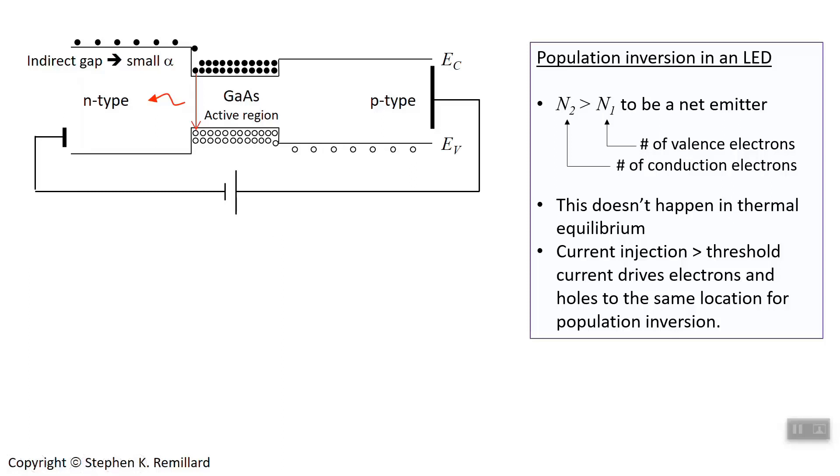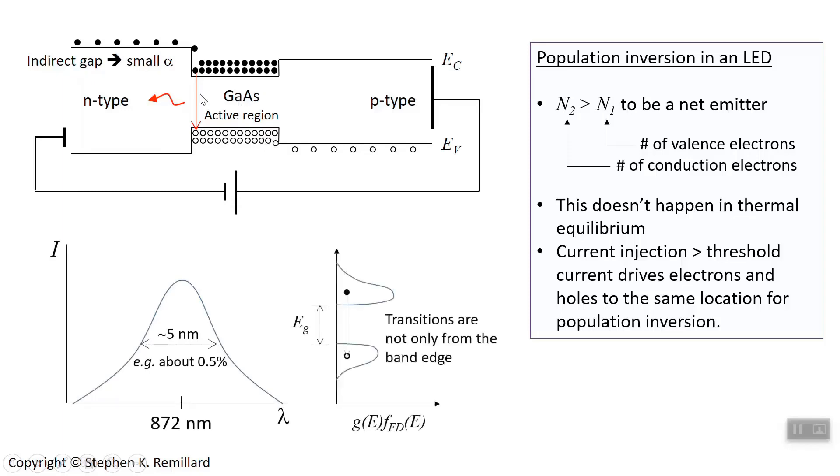The population inversion is a much more straightforward thing here because all you have to do is fill up the well. And when you fill up the well, you end up with a whole bunch of electrons on the conduction band and a whole bunch of vacancies in the valence band. So N2, which is the upper state population, is much larger. I should have at least three greater than signs here. It's much larger than N1, the population of the lower level. You're very deep into population inversion, which, as we've talked about before, doesn't happen in thermal equilibrium.